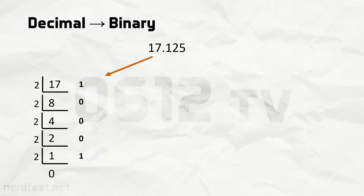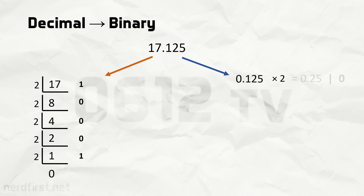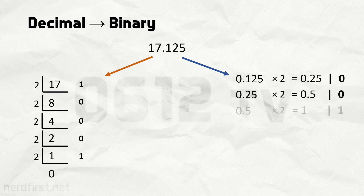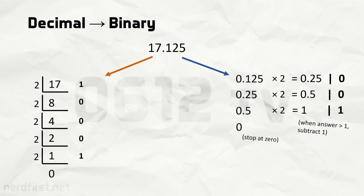Now let's move on to the decimal portion. Because we are dealing with negative powers of 2, we do the inverse — essentially doubling each time. Doubling the number gives us another number, and our result checks the integer portion. If it's 0, the result is 0 and we carry on. When we get a value of 1 or greater, the bit becomes 1, and we subtract 1 from it before carrying on. If it's exactly 1, after subtraction we get 0 and we stop. For the decimal portion, we read off the bits from top to bottom.